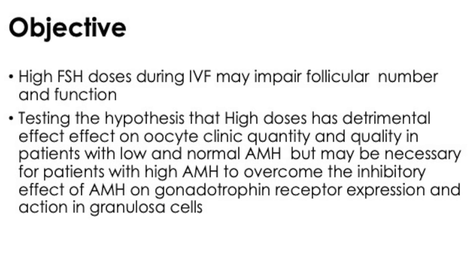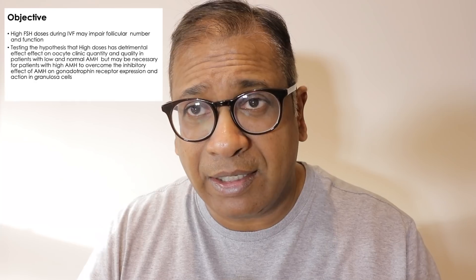At present, our belief is that women with a low AMH need to be given a higher dose, and women with a high AMH need to be given a lower dose. We do know that very high FSH stimulation does impair follicular number and function. This paper was testing the hypothesis that high doses of FSH have a detrimental effect on oocyte quantity and quality in patients with low and normal AMH, and that a higher dose may be required in women with very high AMH to break the inhibitory role of AMH.